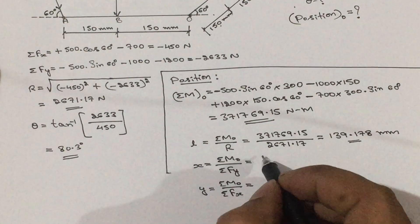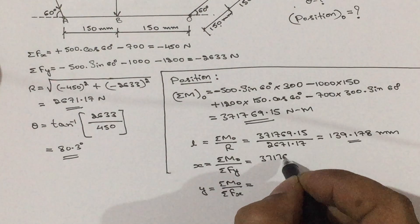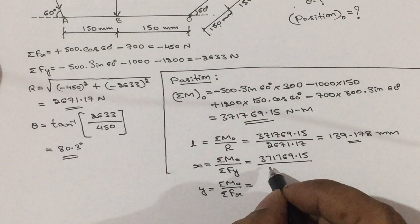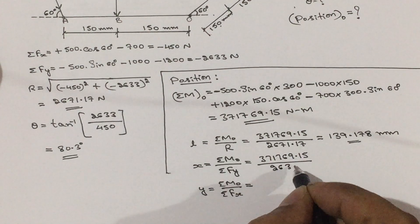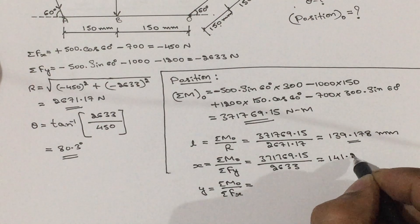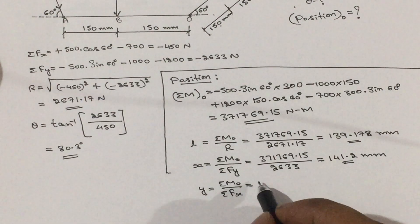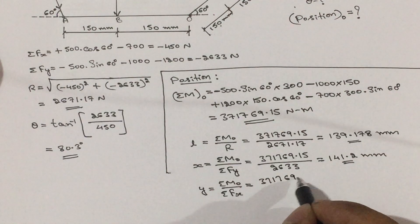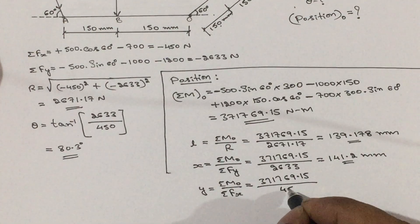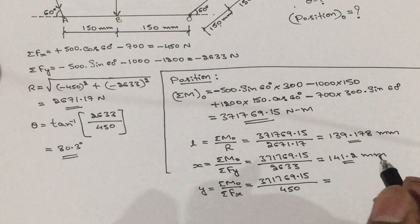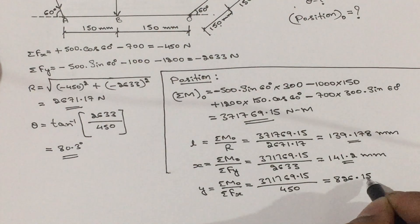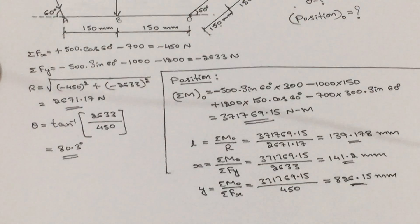Then the Y intercept: sigma M = 371769.15 divided by sigma Fx. We got sigma Fx as minus 450; take the positive value, so plus 450. We are going to get the value as 826.15 millimeter. That's all for this problem. Thank you.